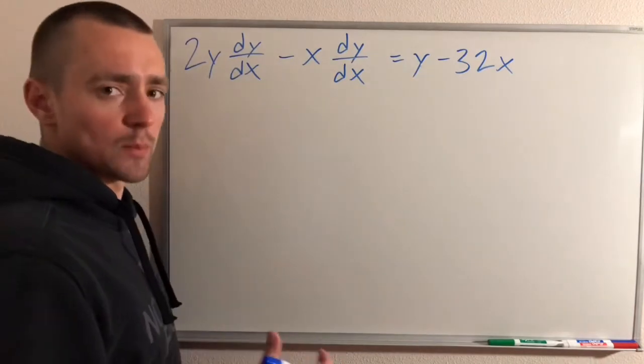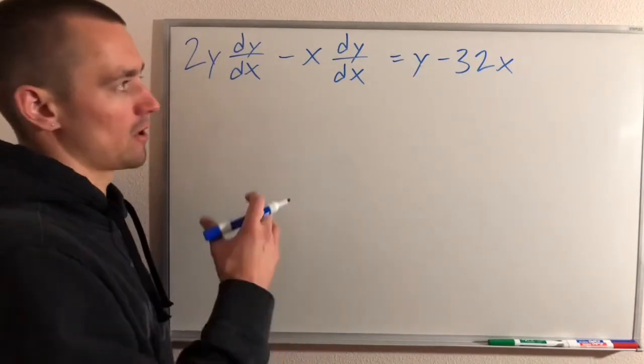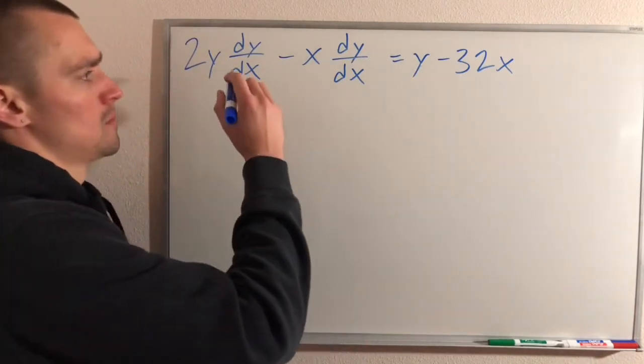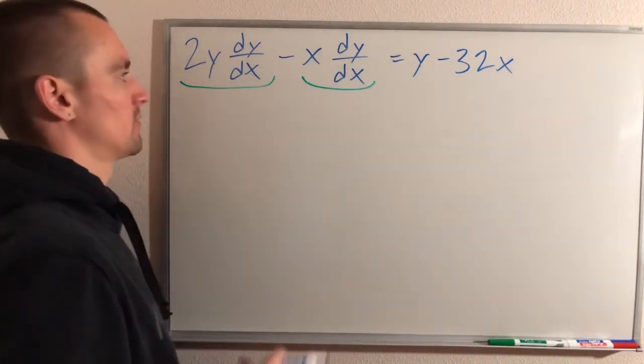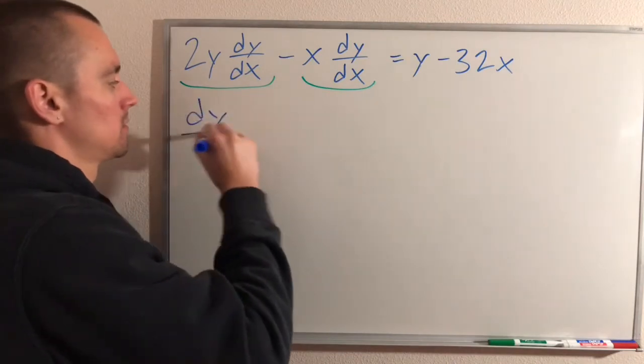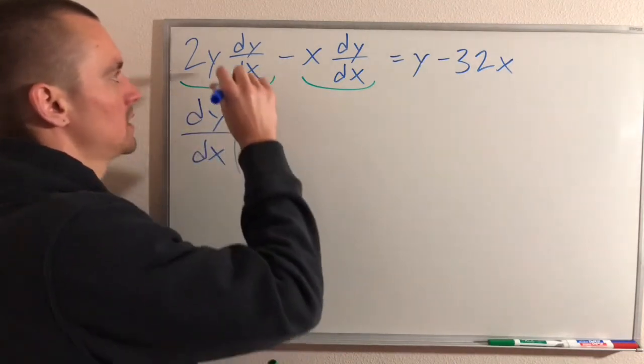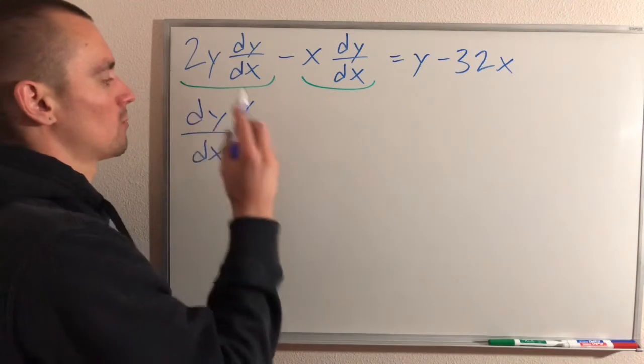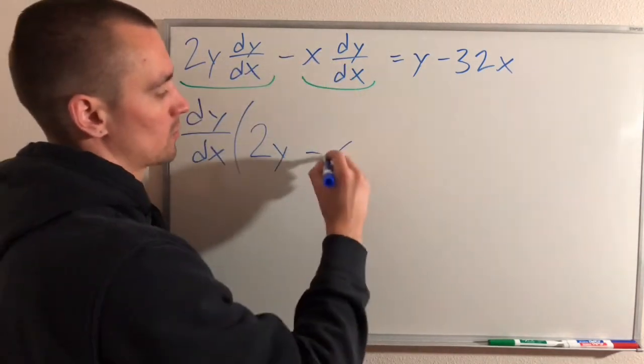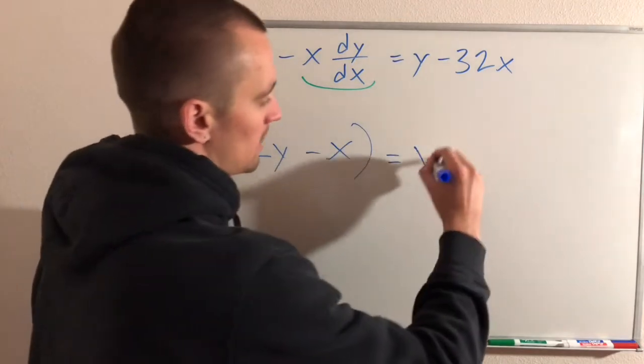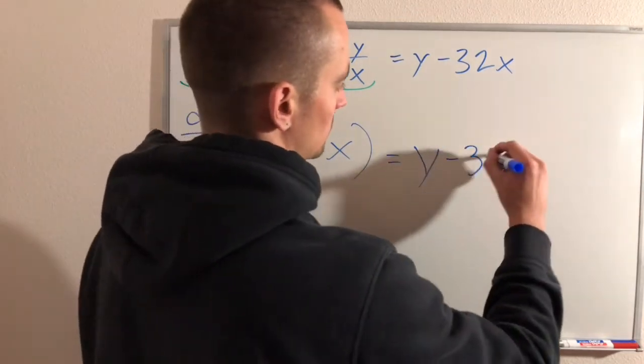Okay, so now that we've separated our dy/dx terms from our non-dy/dx terms, both terms over here on the left side of our equation have a dy/dx in them. So we can factor that out from the whole left side. If we take our dy/dx out of here, we're left with 2y. And then if we take dy/dx from that term, we're just left with minus x. And that's still going to equal y minus 32x.